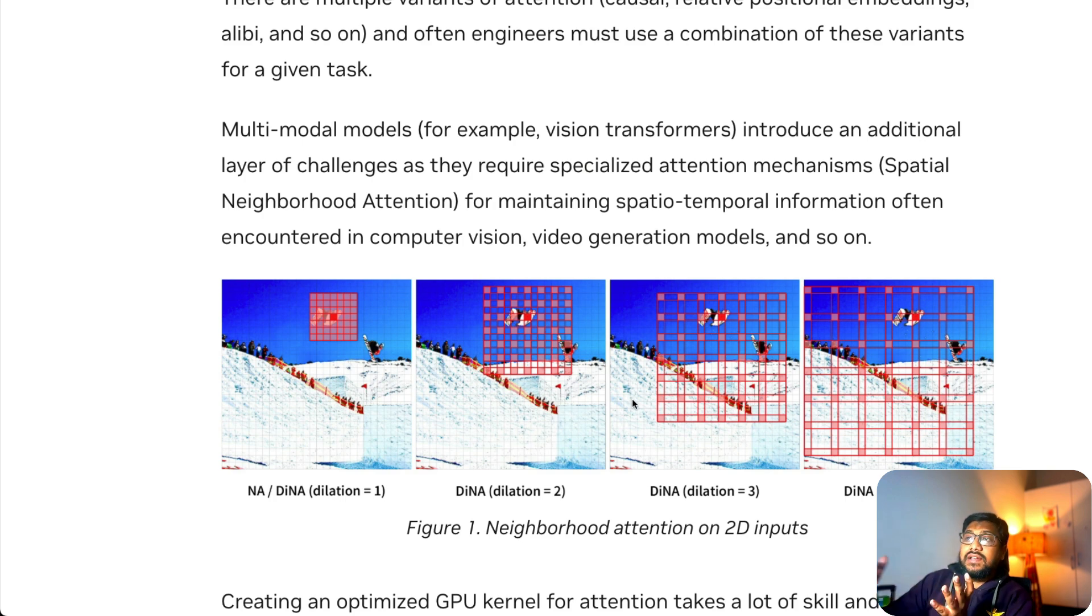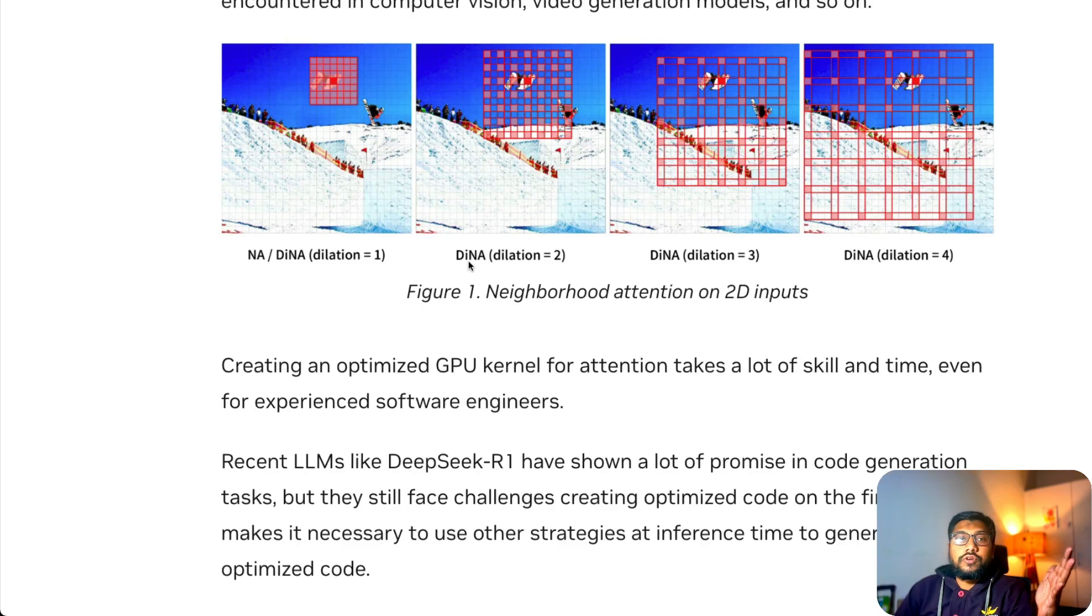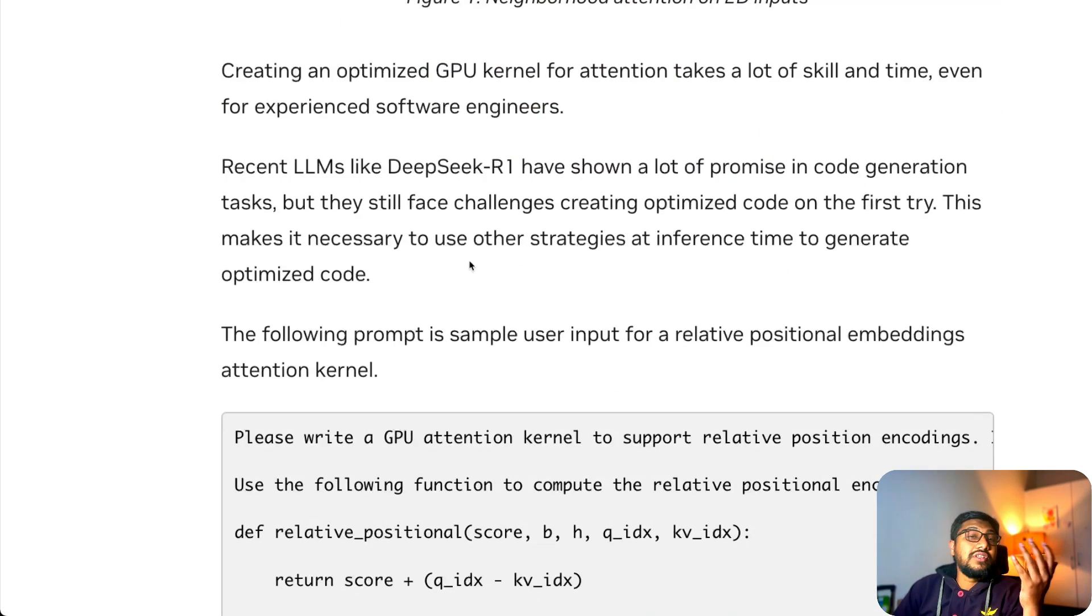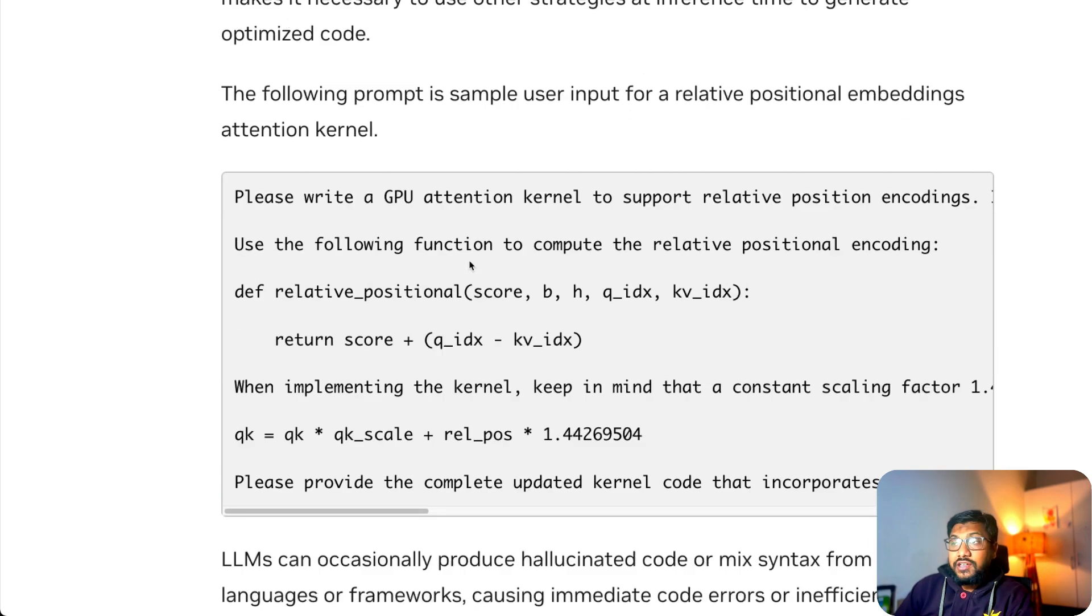These are some different types of attention that you can see. For example, if you have an image, it does certain different things for a multimodal model. Now what NVIDIA engineers summoned DeepSeek R1 to do is to do this GPU kernel programming. This takes a lot of skill. As you know, not everybody is a GPU kernel programmer.